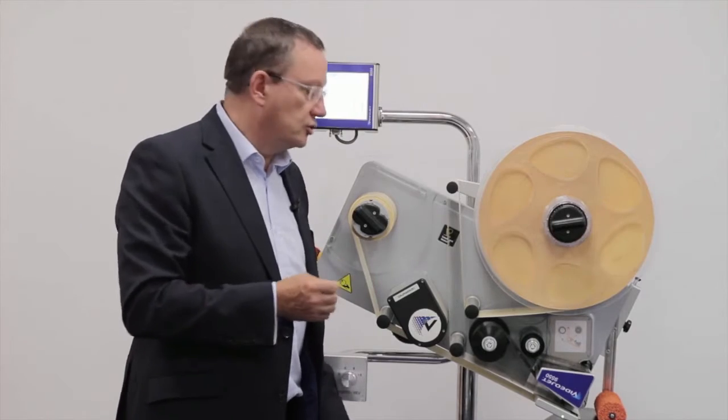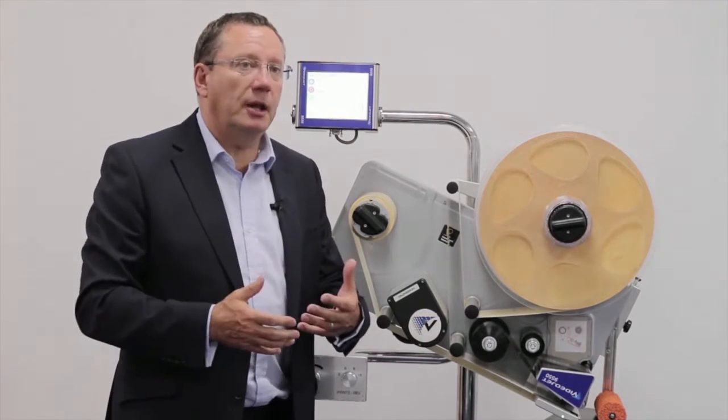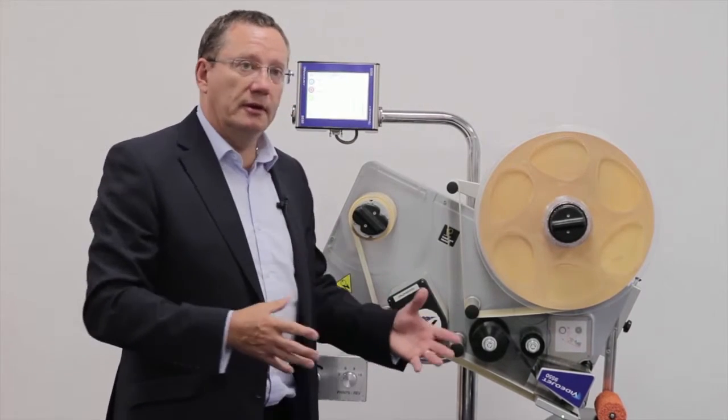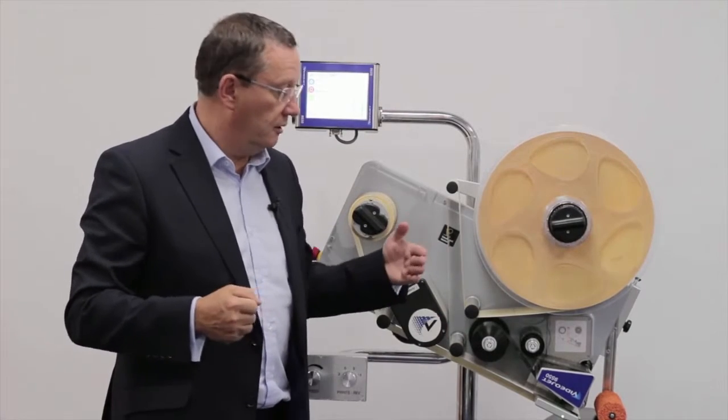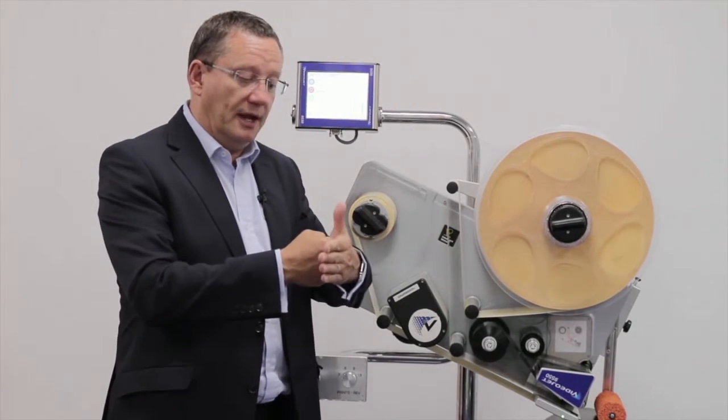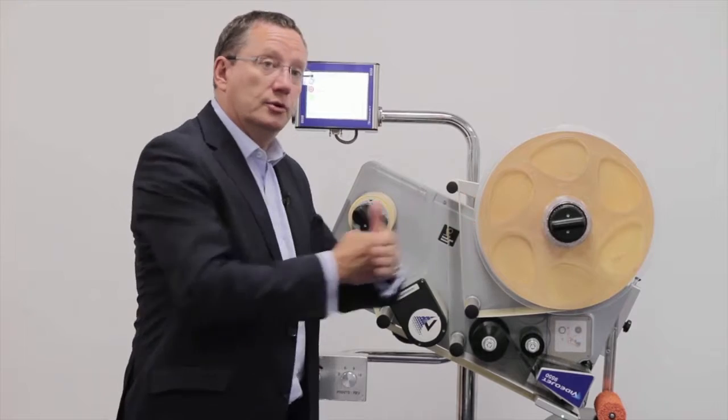Another of the unique features of the VideoJet 9550 is the direct apply method. Ordinary print apply systems will use an air-driven tamp whereby the print engine will print the label, it will spit it out, the tamp will then pick it up and then push it onto the product.